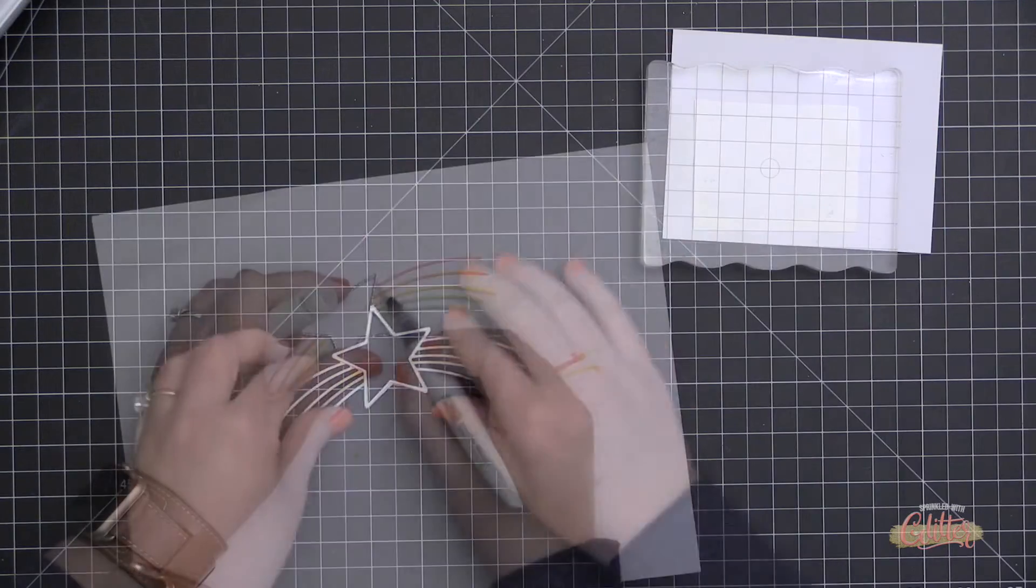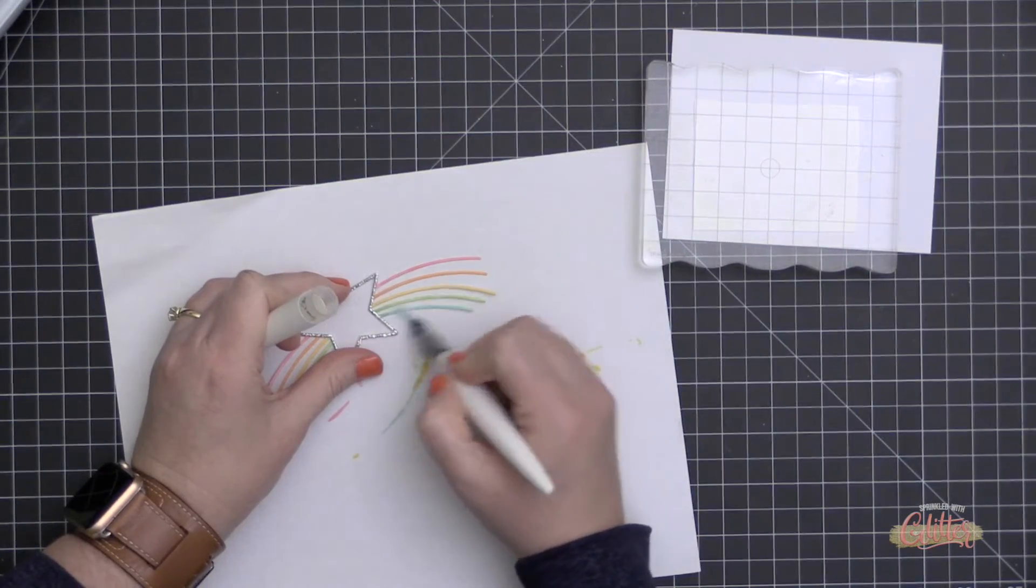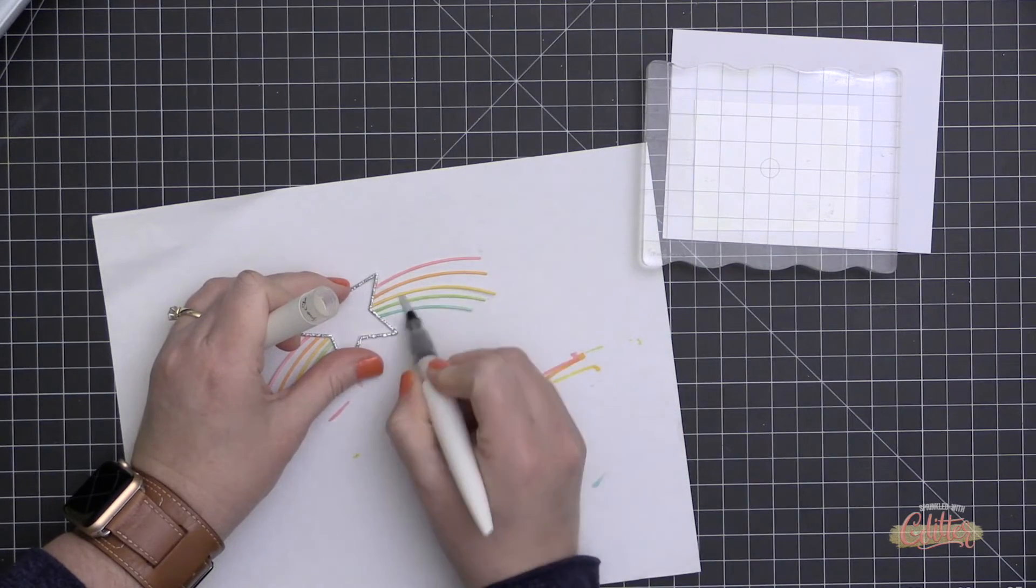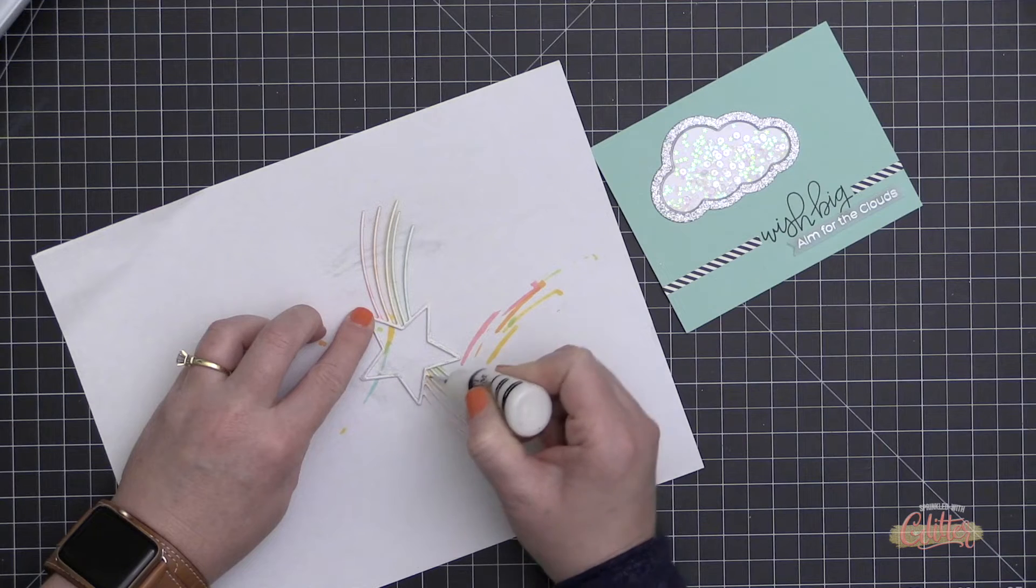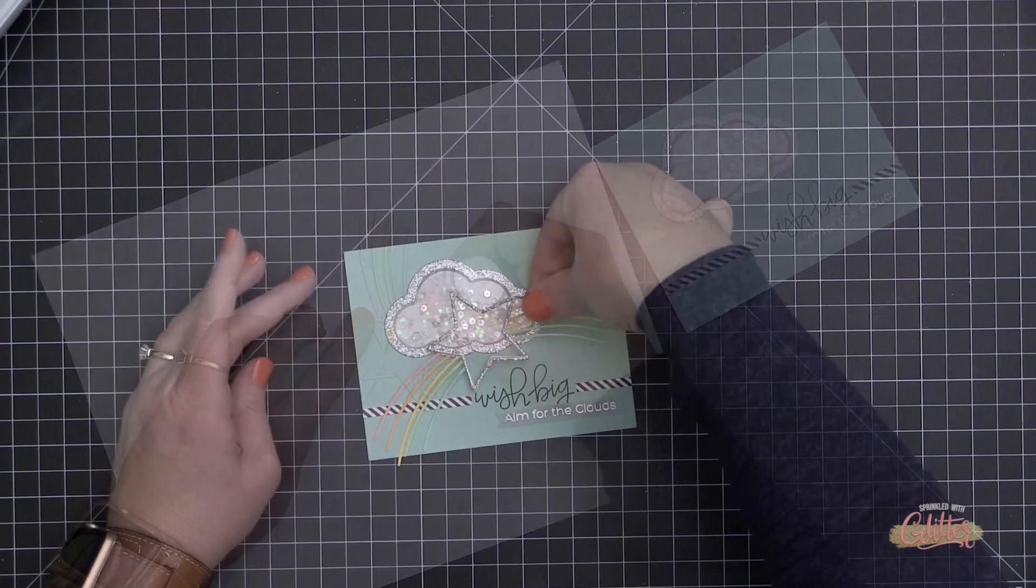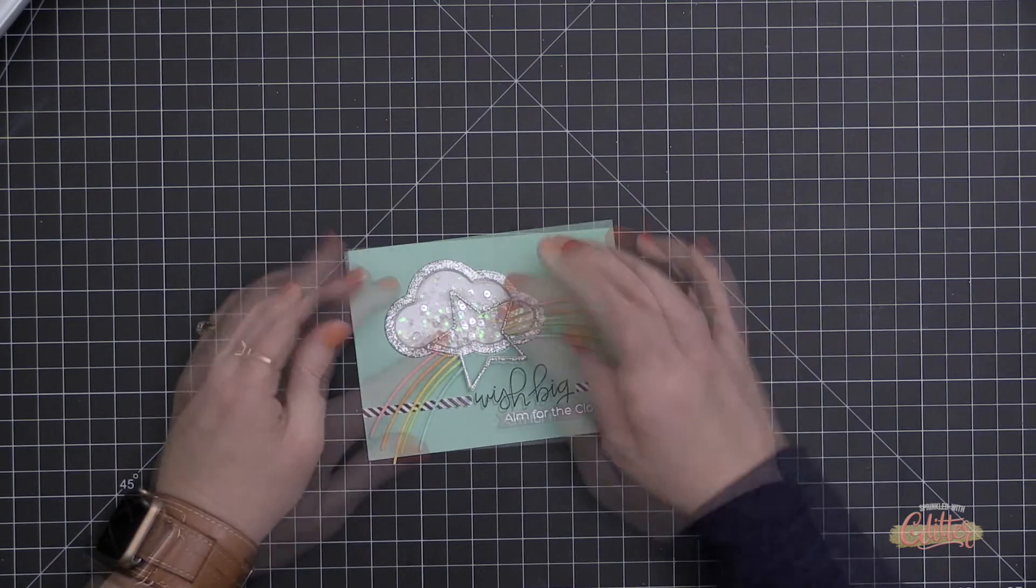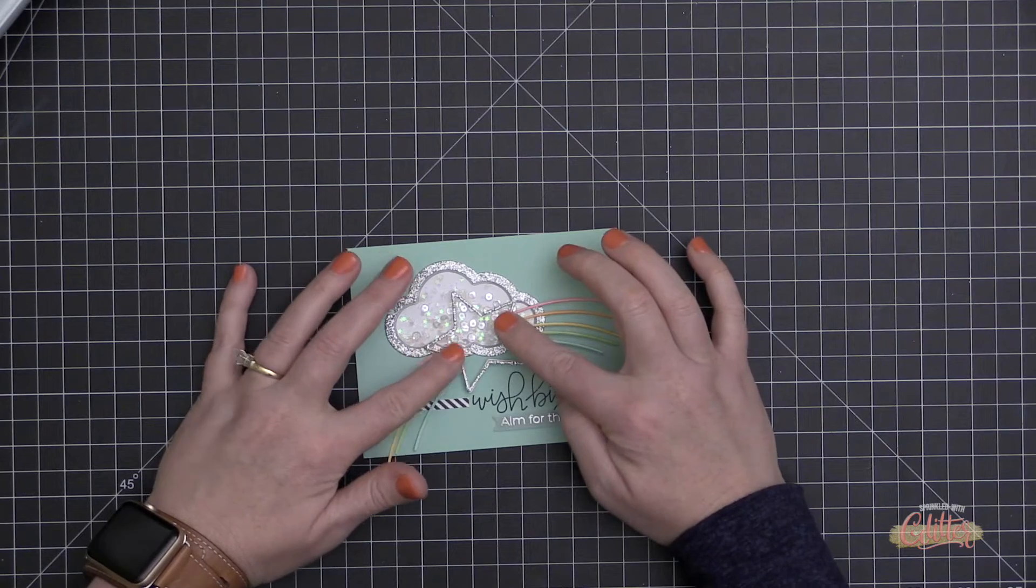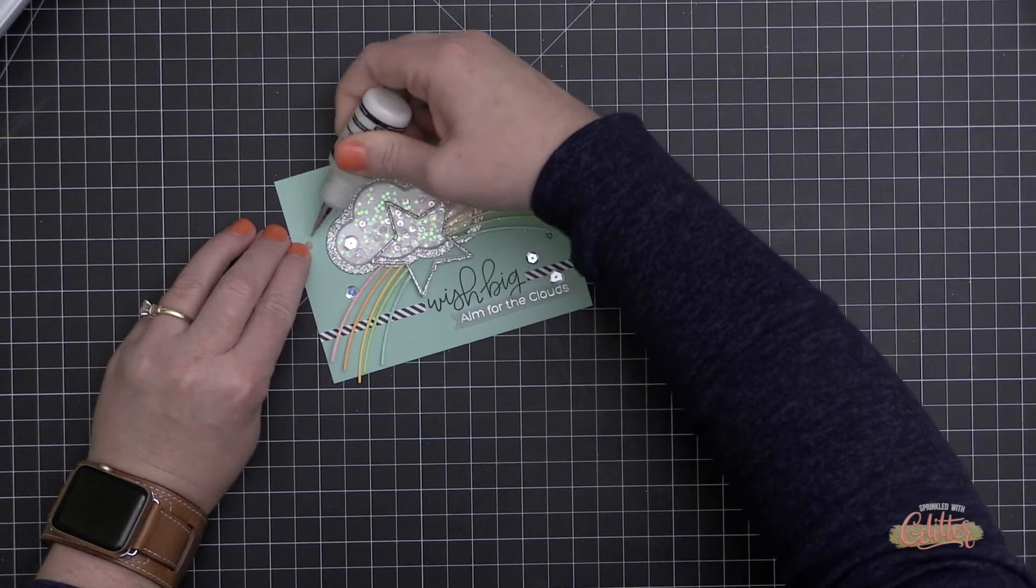Or maybe there is, saggy cards. Those might be worse than leaky guts. Anyway, while that was drying with a heavy block over the back to kind of seal it on there, I went ahead and added some shimmer to those rainbow trails. Now I'm using some Multimedia Matte to adhere that right over my shaker window.